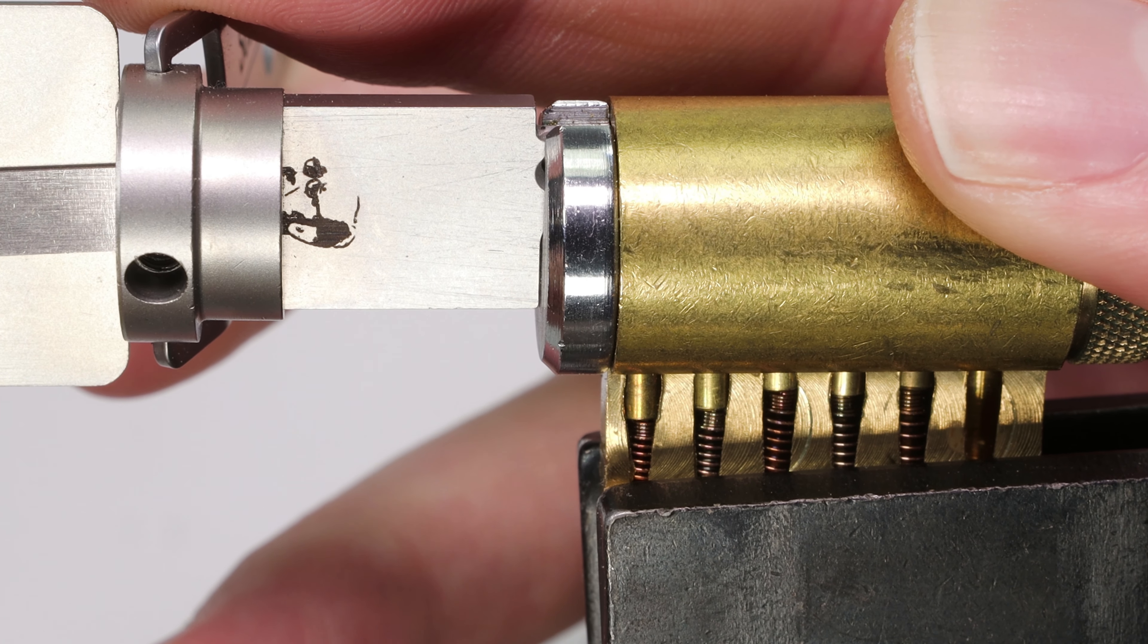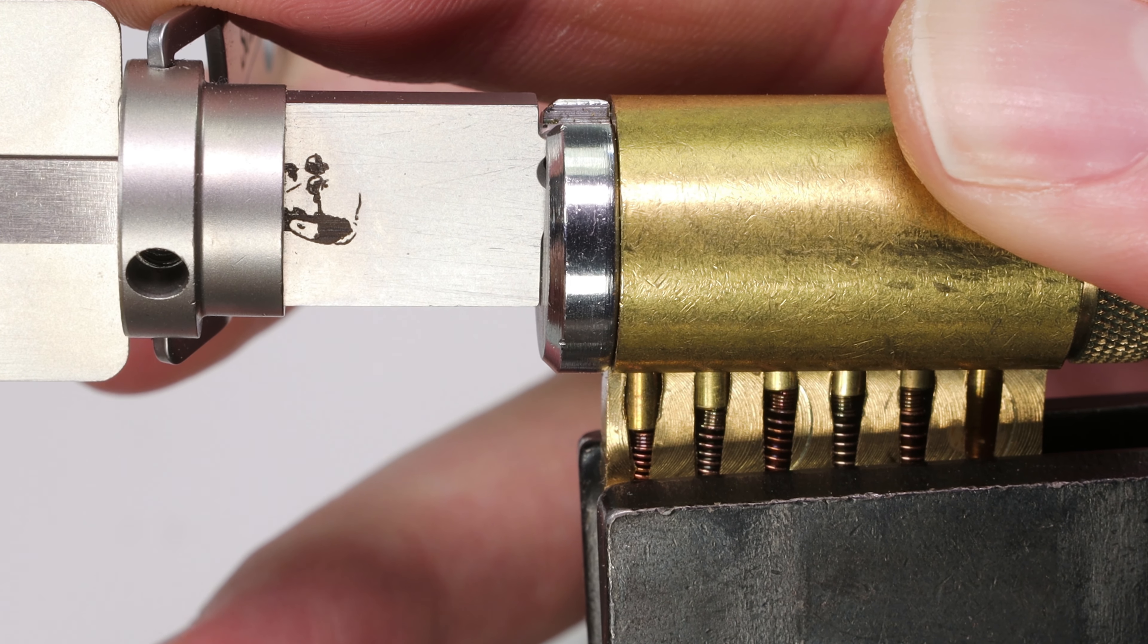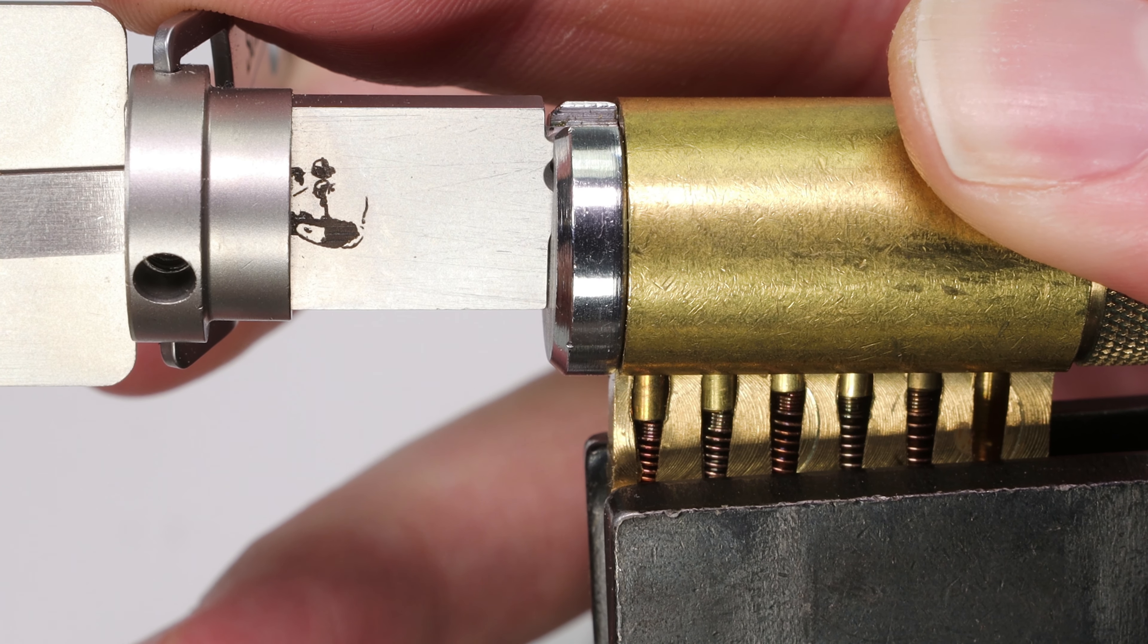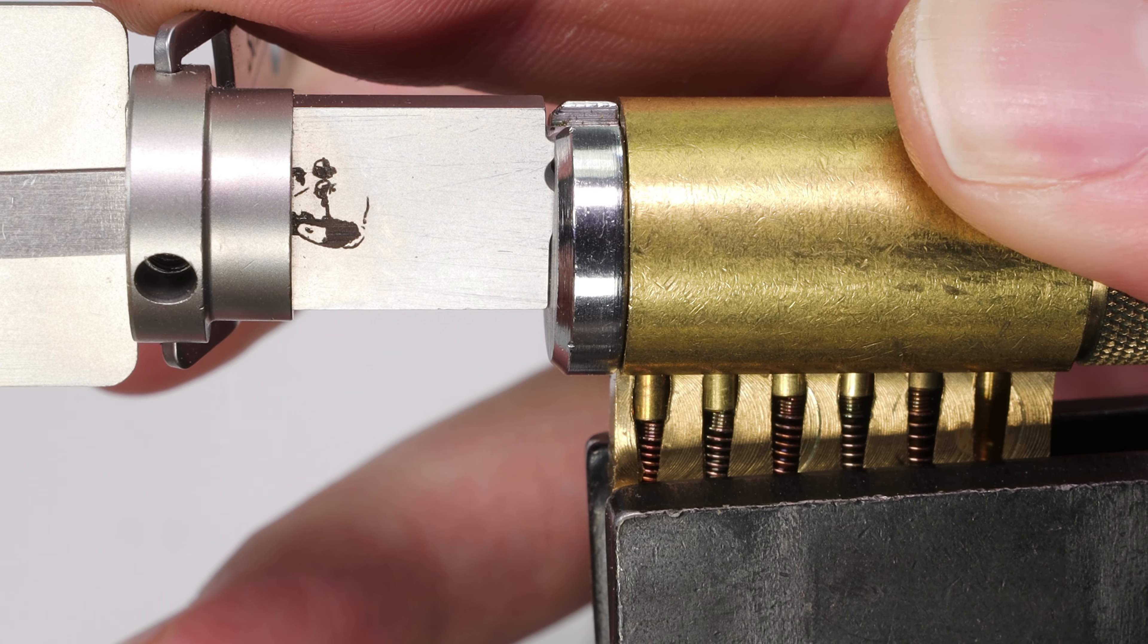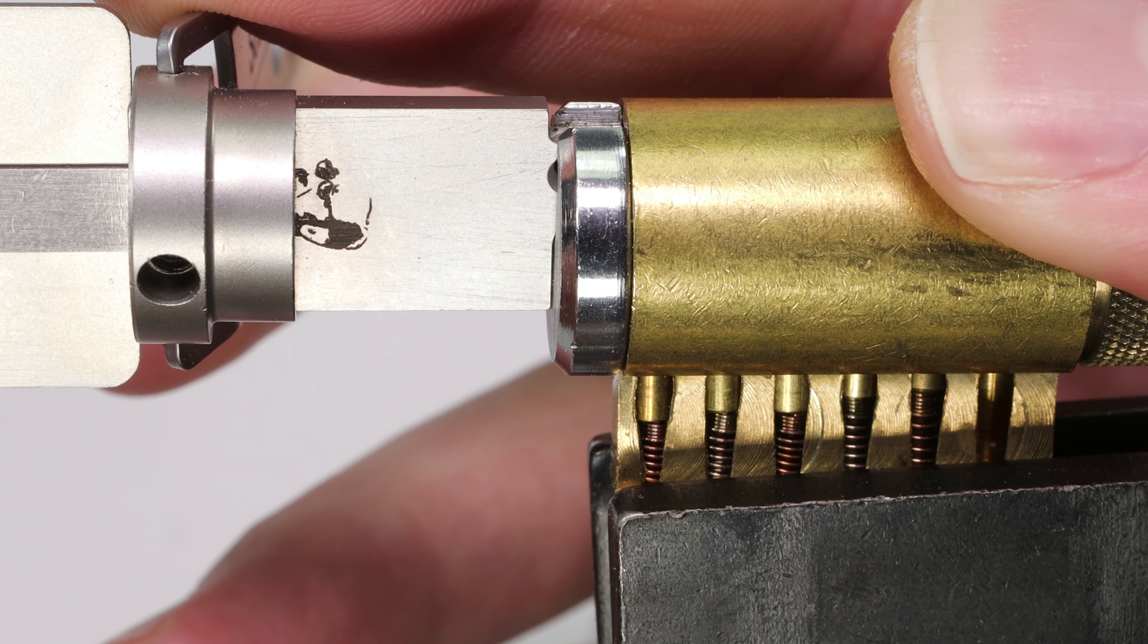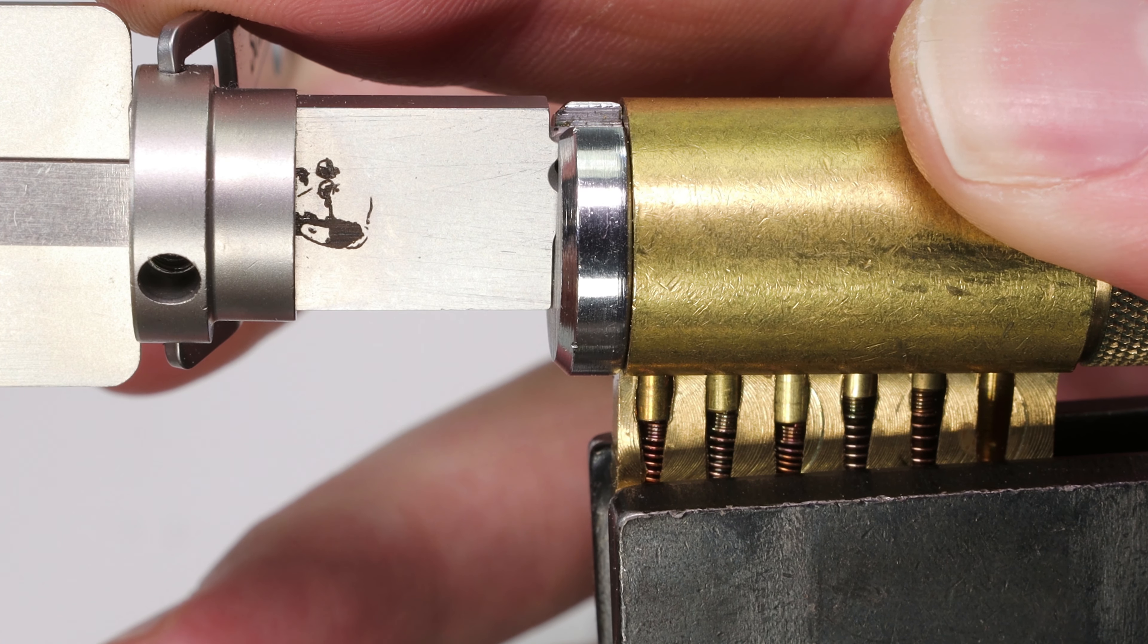So let's try to pick this lock one more time and go through it again. So I'm going to put some tension on the lock and I'm going to lift up on one. So I feel one is binding. It's binding. I got a shear line click. And now when I lift up on one, what I feel is that sunken key pin.